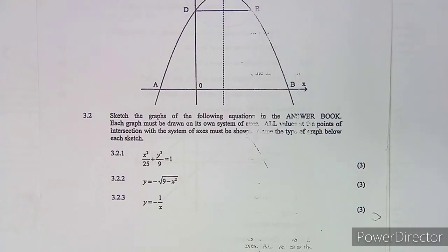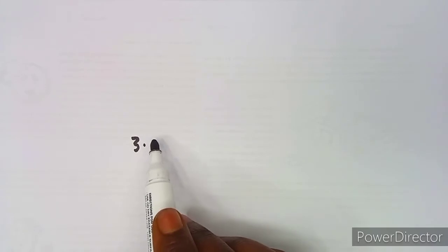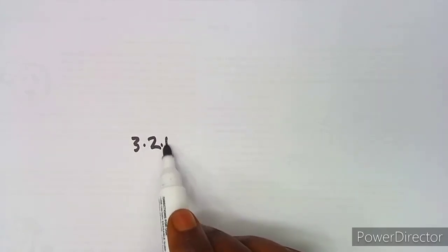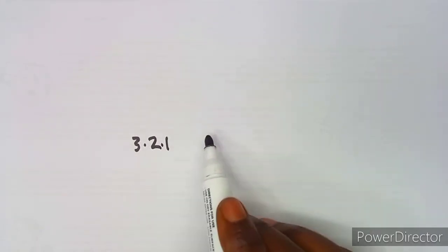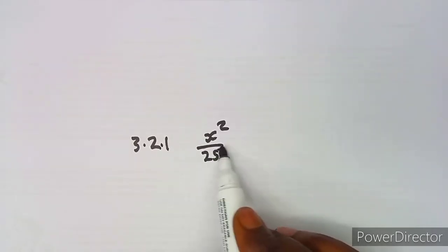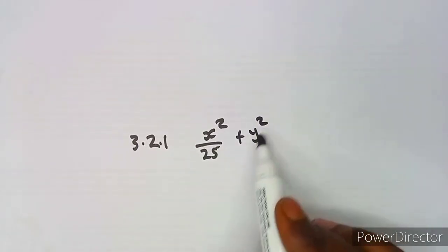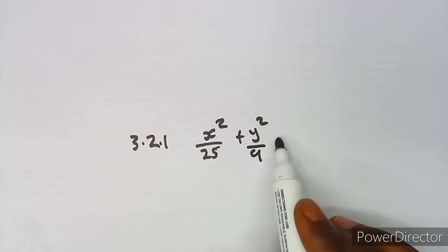The first part we are looking at is question 3.2.1. We are given the equation x squared over 25 plus y squared over 9, which is equal to 1.